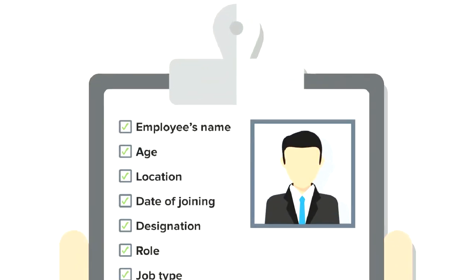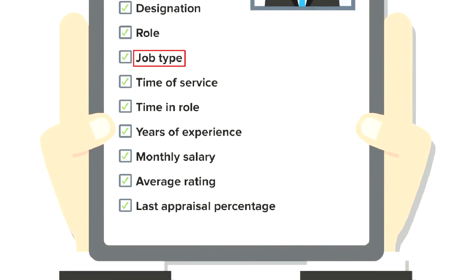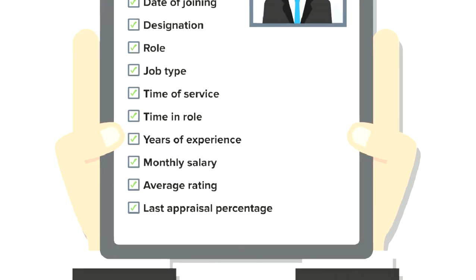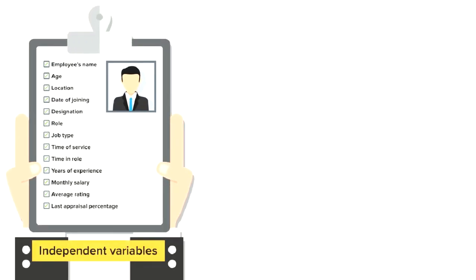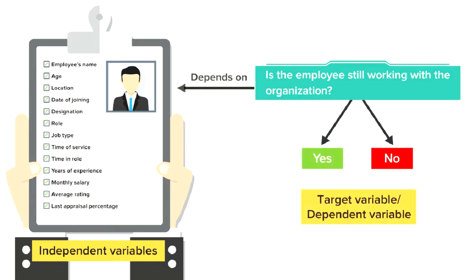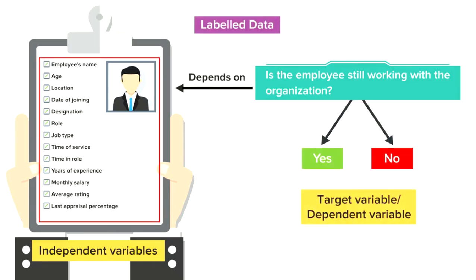Now let us consider another example where we have data of employees of an organization. The information contains employee's name, age, location, date of joining, designation, role, job type, time of service, time in role, years of experience, monthly salary, average rating, last appraisal percentage, etc. In addition to this, we also have information about the employee leaving the organization or not. So this data again is called labeled data because it has employee-level details and also tells us whether a particular employee is still with the organization or not.